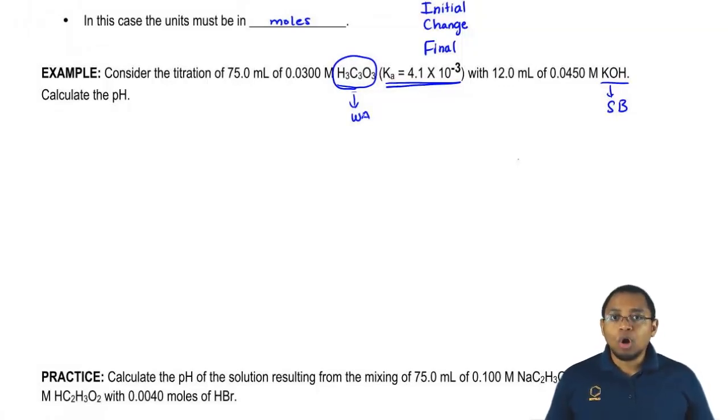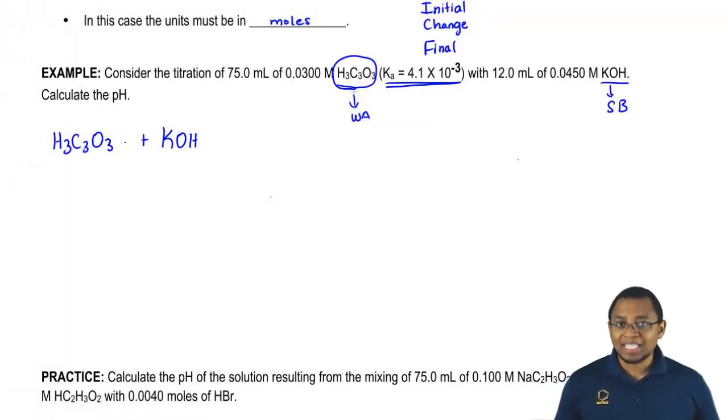When dealing with an ICF chart, whatever is strong has to always be a reactant. We have a strong base, so that has to be our reactant. Bases naturally attack acids, so this strong base has to react with the weak acid. Our weak acid is on the same side with the strong base. Whatever is strong is a reactant, and it attacks its opposite. Since the strong base is a reactant, the weak acid has to be next to it as a reactant.